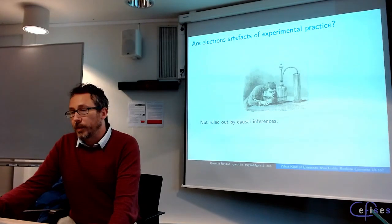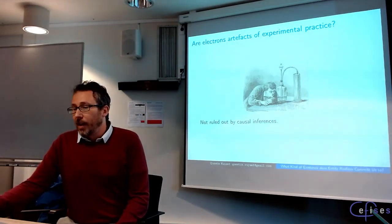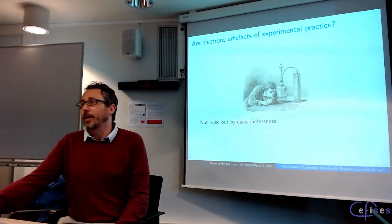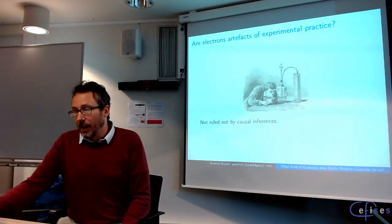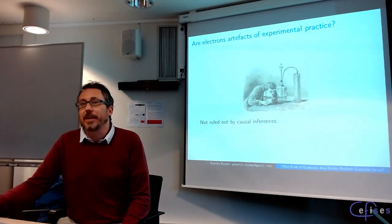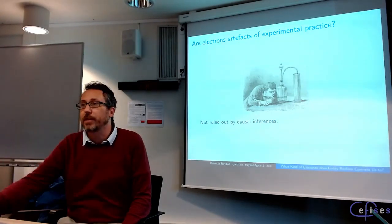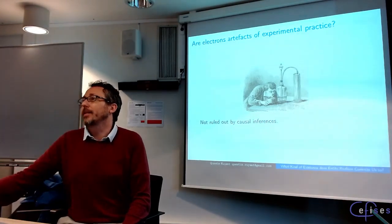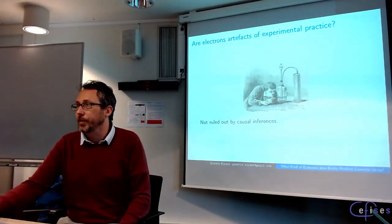Are electrons artifacts of experimental practice? Maybe not — it's not intuitive to say so. But a non-realist could bite the bullet. In any case, the main point I want to make is that whether or not it is intuitive, the claim that electrons are artifacts is not ruled out by causal inference. If entity realists want a robust notion of existence, more is needed than just the kind of causal inference they put forth.